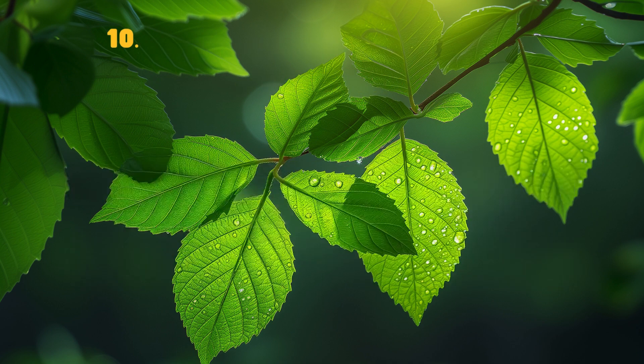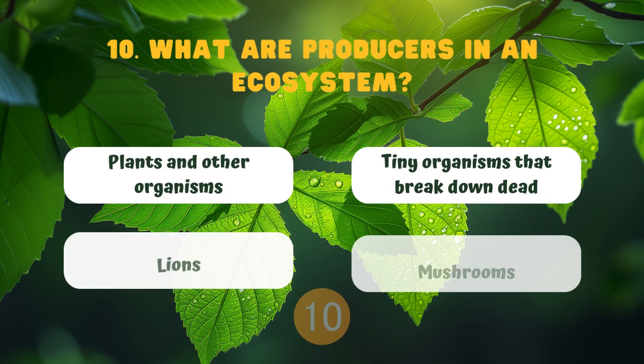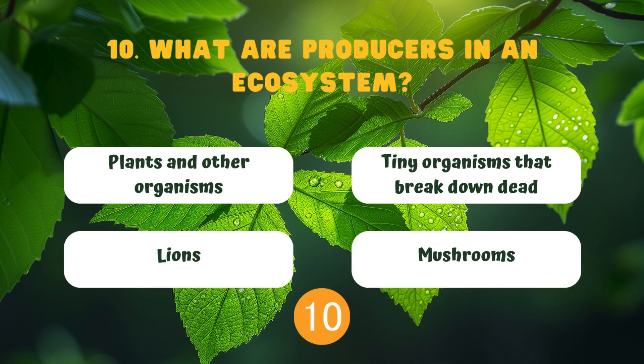What are producers in an ecosystem? Plants and other organisms. Tiny organisms that break down dead. Lions. Mushrooms.